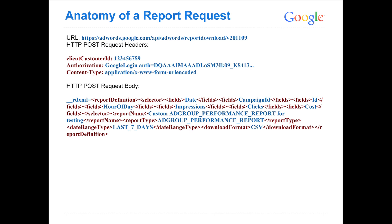Here's an example of how a report request will look. You have your URL, which is now versioned: adwords.google.com/api/AdWords/reportdownload, and it's now slash v21909. This is new for v21909. The key benefit is that we can now start versioning report downloads, so we can make changes without your code instantly breaking. You're still going to use your HTTP POST request headers such as client customer ID, your authorization with the auth token specified in Google login, and content type of form URL encoded. The request body needs to be URL encoded so we can correctly interpret the request.